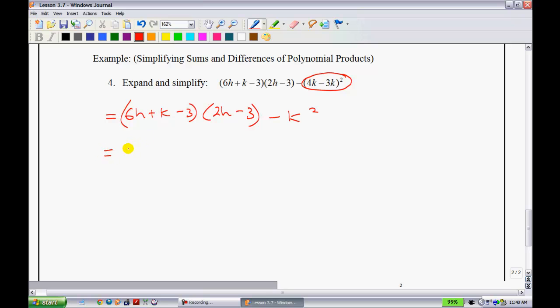So multiplying these together we have 6h times 2h gives you 12h squared, minus 18h plus 2kh. Make sure your k's and your h's don't kind of meld together here. Minus 3k minus 6h plus 9 minus k squared.